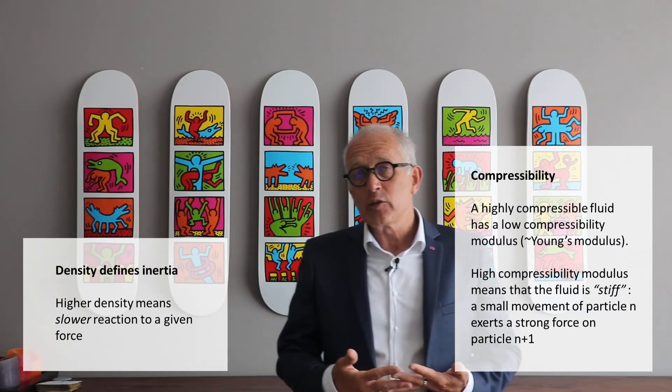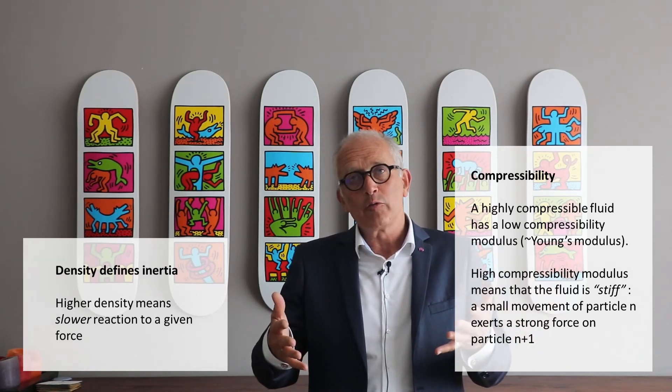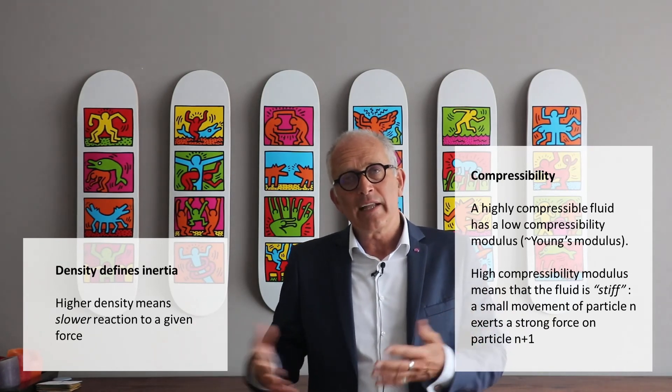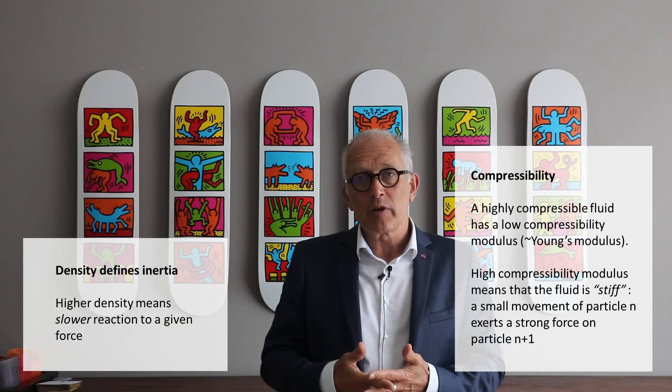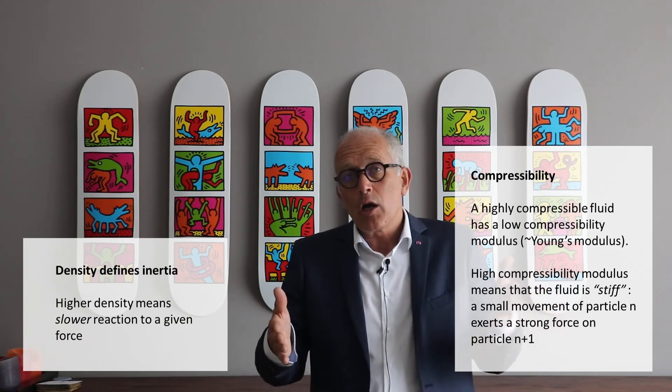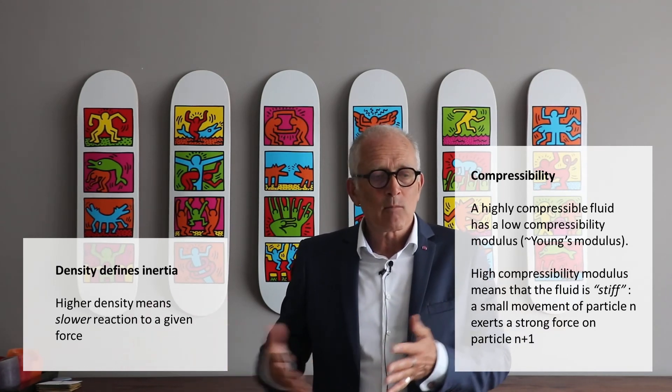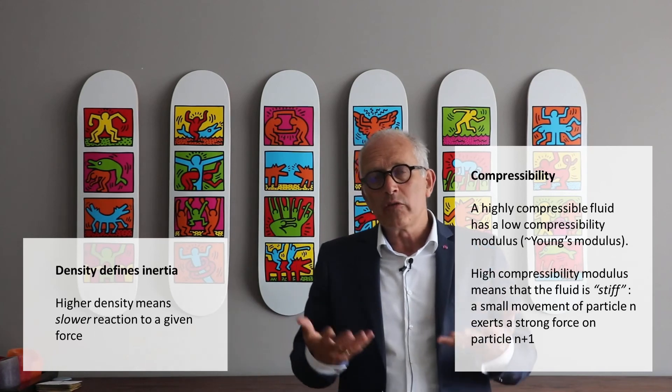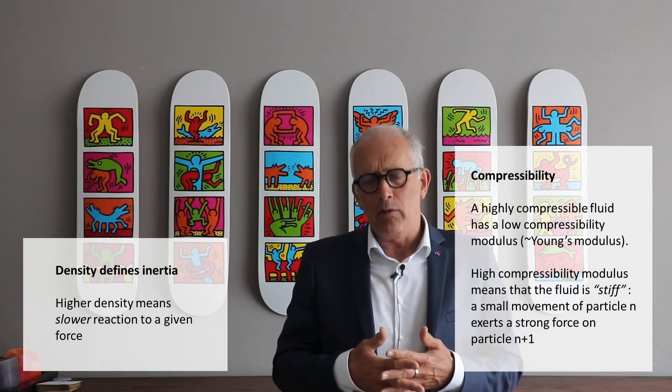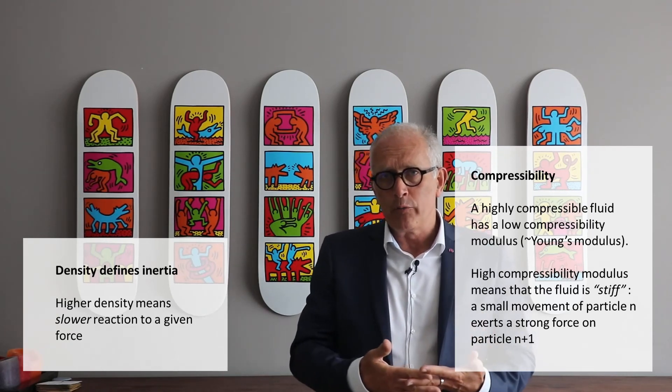Now what is the effect of the compressibility modulus is that for a given displacement of one of the mass, the pressure that will act on the next mass will depend on the compressibility. If the compressibility is low, you will need a large movement of one particle to get a large pressure on the other one. And so you see that all things being equal, a fluid that is highly compressible will have a lower speed of sound.